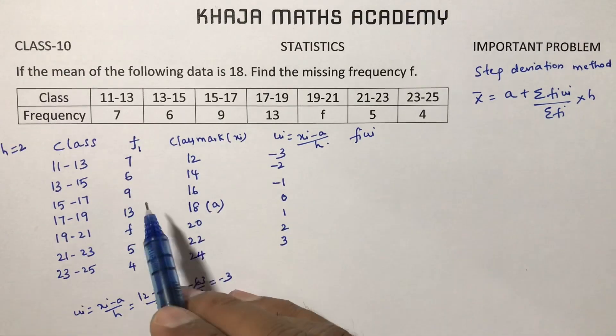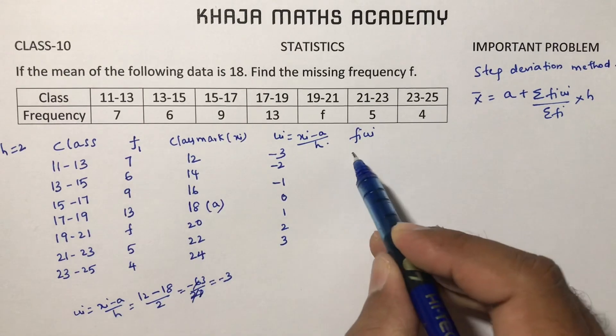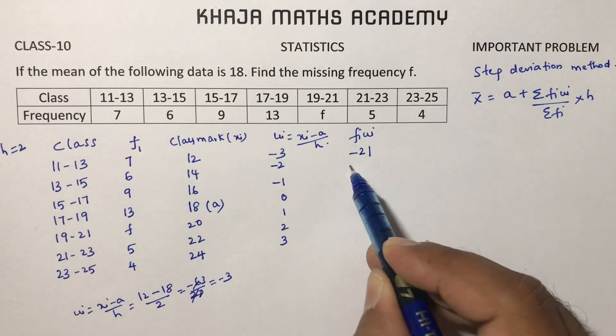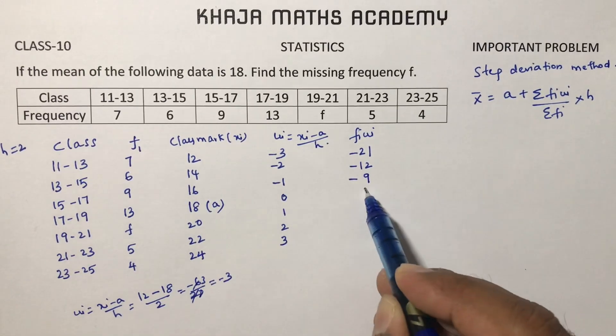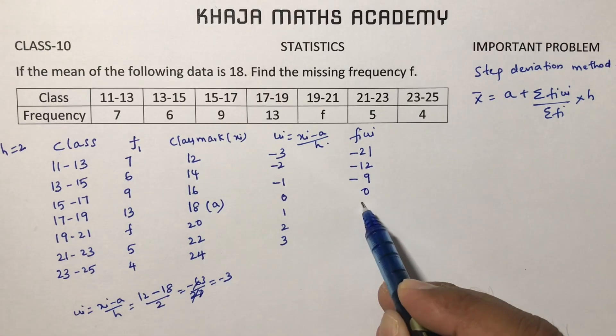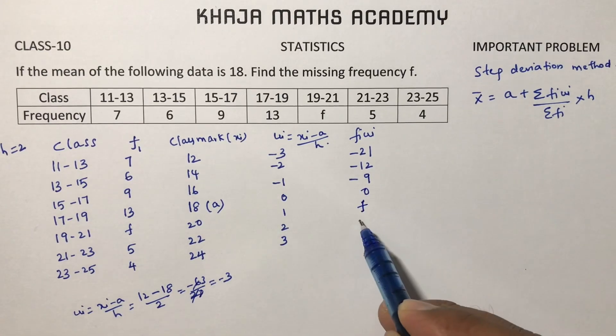So here it is Fi ui. 7 times minus 3 is minus 21. 6 times minus 2 is minus 12. 9 times minus 1 is minus 9. 13 into 0 is 0. 1 into F is F. 5 into 2 is 10. 4 into 3 is 12.